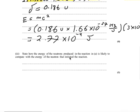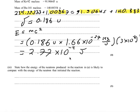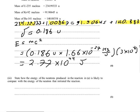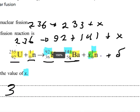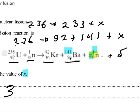Coming down here, it says, state how the energy of the neutrons produced in the reaction in A is likely to compare with the energy of the neutron that initiated the reaction. So coming back up to A, there are neutrons on both sides of the reaction. There's one here, it initiated the reaction, and there's neutrons here. And the question asks us to compare the energy of these neutrons to that of the original neutron.